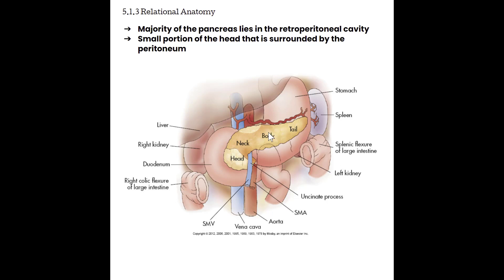In our image here, we can see the pancreas — this yellow, comma-shaped structure. The head sits within the cradle of the C-loop of the duodenum. The tail then extends more superiorly towards the hilum of the spleen. The tricky part is that the pancreas sits right posterior to the stomach, so everything covered by the stomach makes it hard to see by ultrasound.